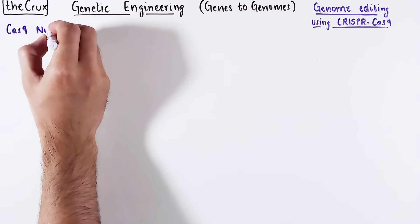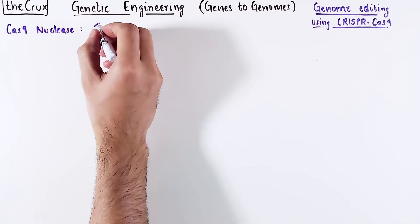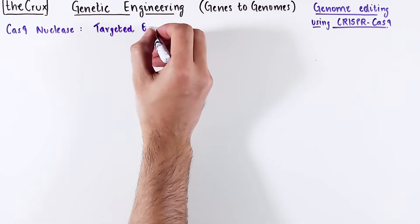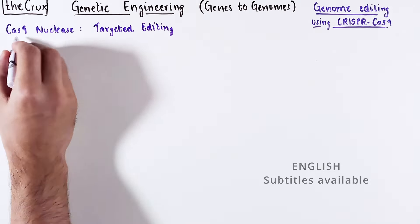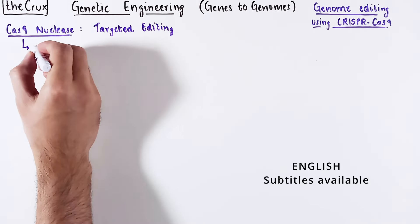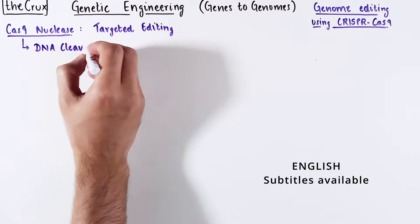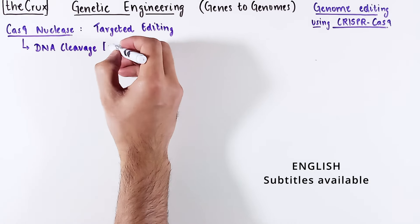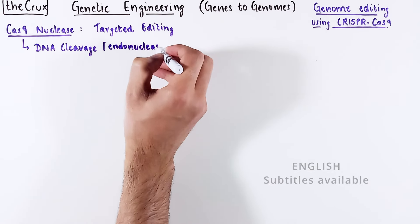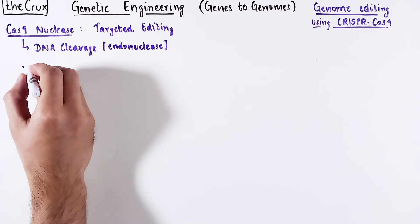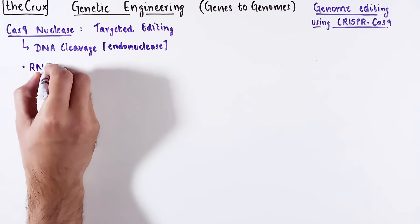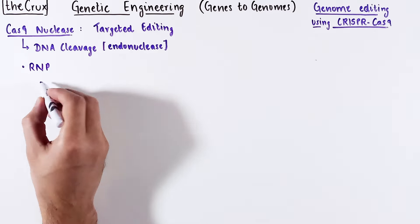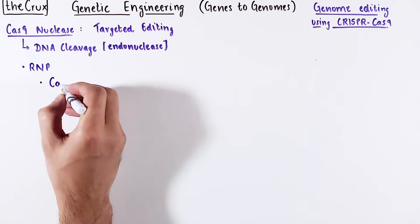CRISPR-Cas9-based genome editing uses the Cas9 nuclease for targeted DNA cleavage. The Cas9 is an endonuclease — technically, the Cas9 nuclease is a ribonucleoprotein.